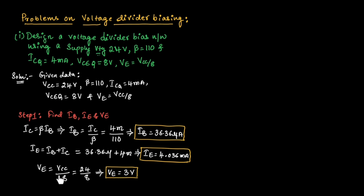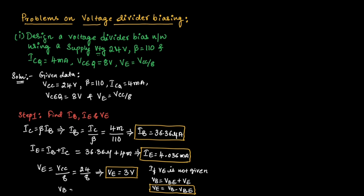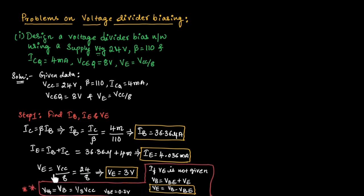In some problems, they will not give the value of VE. In that case, we need to use the formula VB is equal to VBE plus VE, from which VE equals VB minus VBE. We can find VB by using (1/3) VCC, since VB is nothing but VTH, Thevenin's equivalent voltage. That's why VB equals (1/3) VCC. We know VBE is 0.7 volts. Use this formula if VE value is not given.